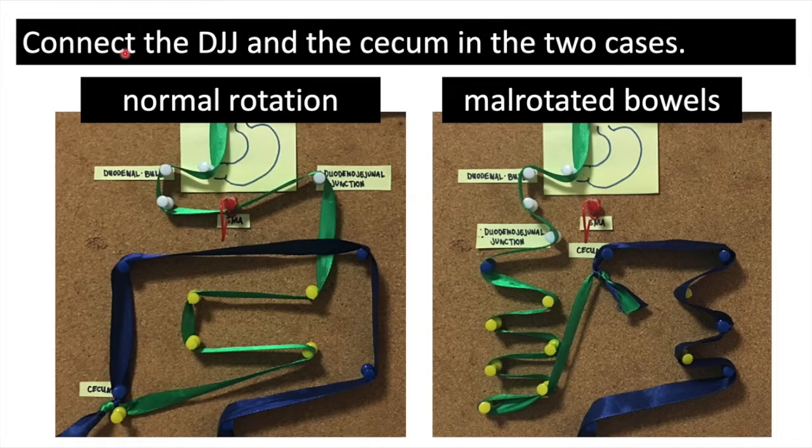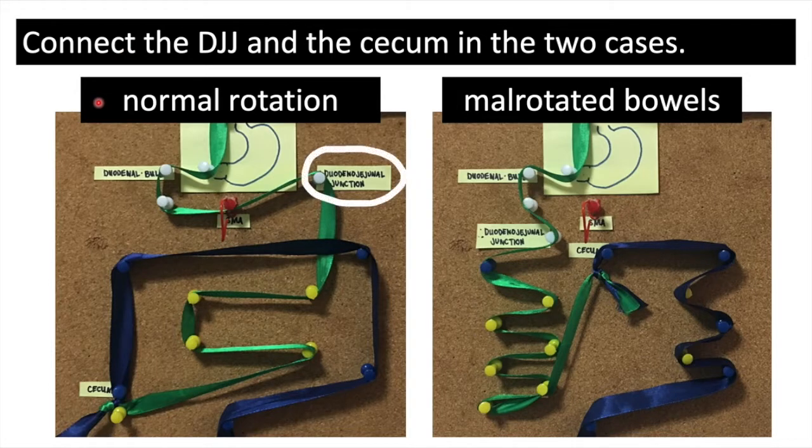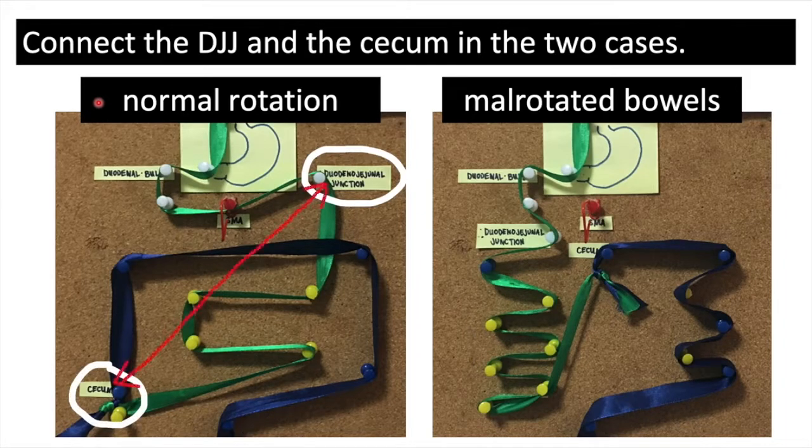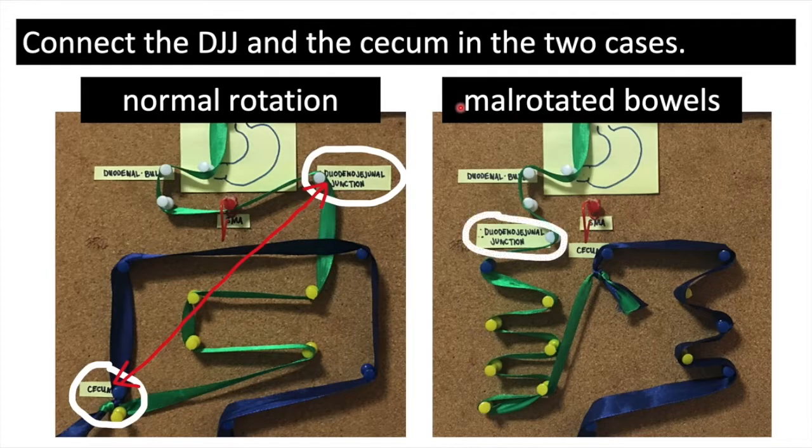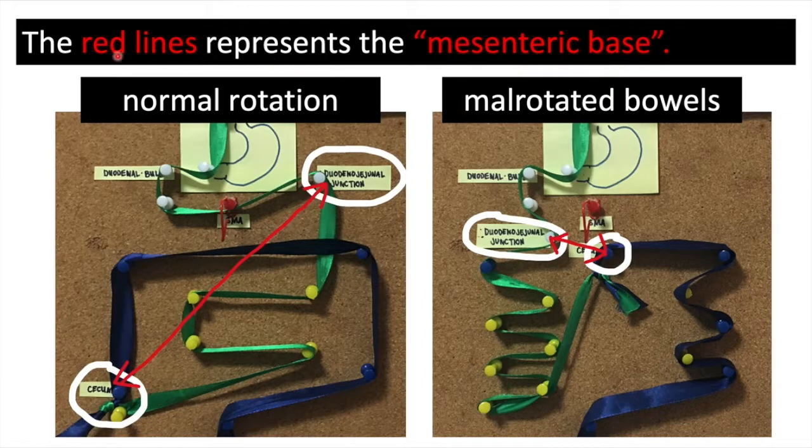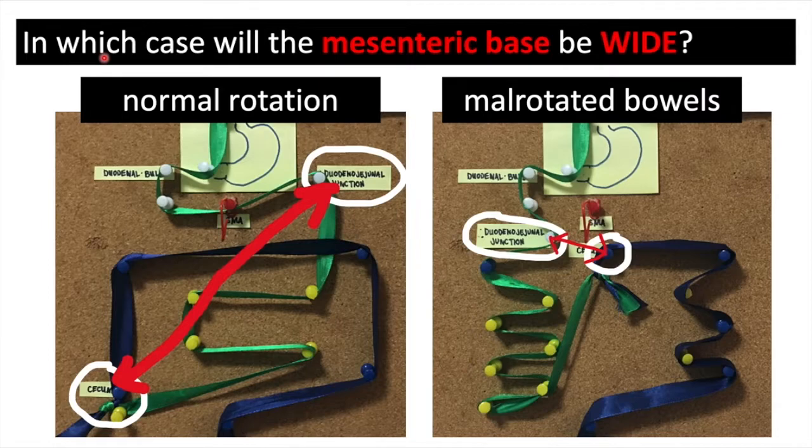Now, let's connect the DJJ and the cecum in these two cases. First, in a normally rotated bowel. Here is the DJJ, cecum, and we connect the two. What about here on the right? DJJ, cecum, and here's that line. The red lines would represent the mesenteric base. In which case is the mesenteric base wide? It's here in the normally rotated bowel.